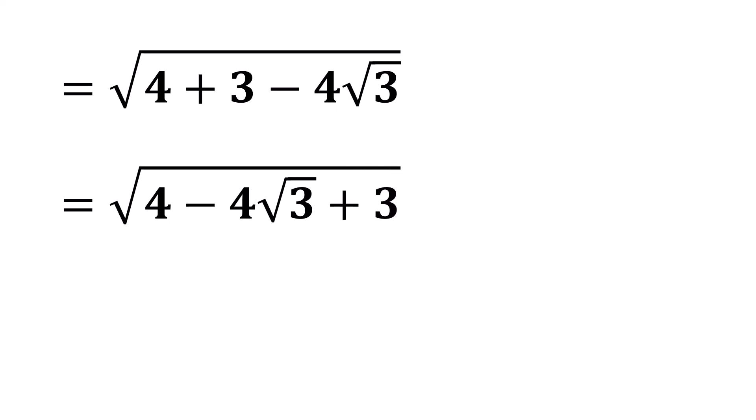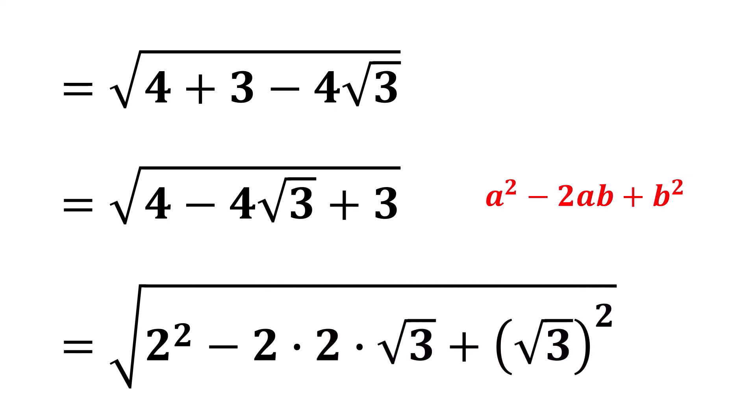To rewrite the inside terms in the form A squared minus 2AB plus B squared, we get the square root of 2 squared minus 2 times 2 times the square root of 3 plus the square root of 3 squared.